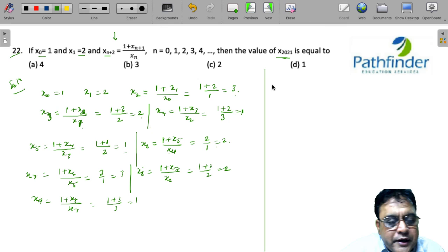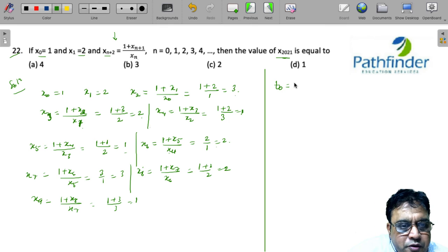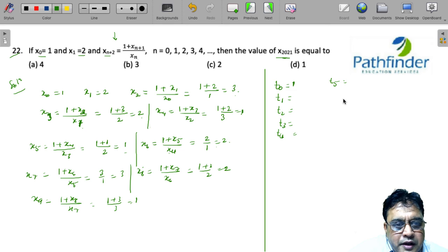From the 0th term, what do you get? t₀, t₁, t₂, t₃, t₄, t₅, t₆, t₇, t₈, t₉.